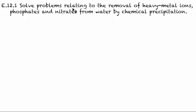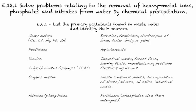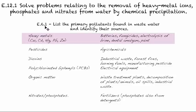In this video, we're going to solve problems relating to the removal of heavy metal ions, phosphates, and nitrates from water by chemical precipitation. There are a few connections we can draw to the previous curriculum. The first one is when we were looking at the SL content of E.6.1, looking at the pollutants we find in wastewater — some of the heavy metals and their sources. We're going to look at how we can remove these types of heavy metals using solubility.